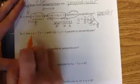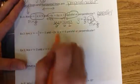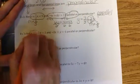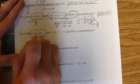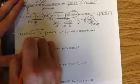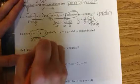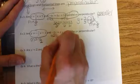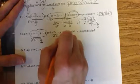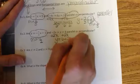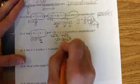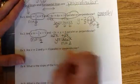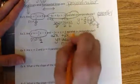Number 2: are y equals negative 1 half x minus 1 and negative 2x plus y equals 6 parallel or perpendicular? y equals negative 1 half x minus 1 is already solved for us, so m is negative 1 half. The second one is not solved for y, so we add 2x to both sides and get y equals 6 plus 2x, so the slope is 2. Negative 1 half and 2 are not the same, so it is not parallel.